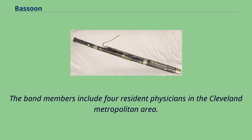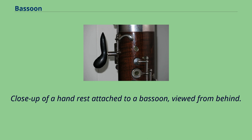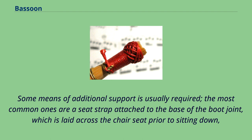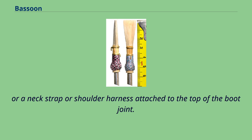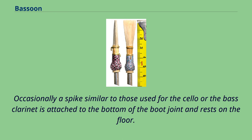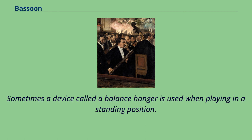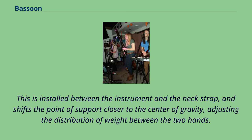The bassoon is held diagonally in front of the player, but unlike the flute, oboe and clarinet, it cannot be easily supported by the player's hands alone. Some means of additional support is usually required. The most common ones are a seat strap attached to the base of the boot joint, which is laid across the chair seat prior to sitting down, or a neck strap or shoulder harness attached to the top of the boot joint. Occasionally a spike similar to those used for the cello or the bass clarinet is attached to the bottom of the boot joint and rests on the floor. Sometimes a device called a balance hanger is used when playing in a standing position; this shifts the point of support closer to the center of gravity, adjusting the distribution of weight between the two hands.